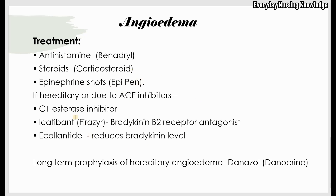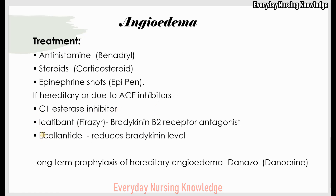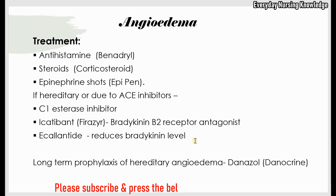For hereditary and ACE inhibitor-induced angioedema, the pathophysiology is bradykinin-based, not histamine-based, so treatment differs. First is administration of C1 esterase inhibitor, which can reduce bradykinin levels. Second is icatibant, a bradykinin B2 receptor antagonist — it blocks the bradykinin receptor sites on blood vessels so bradykinin cannot bind, blocking its action and reducing swelling. Third is ecallantide, which also reduces bradykinin levels and can prevent episodes of angioedema.